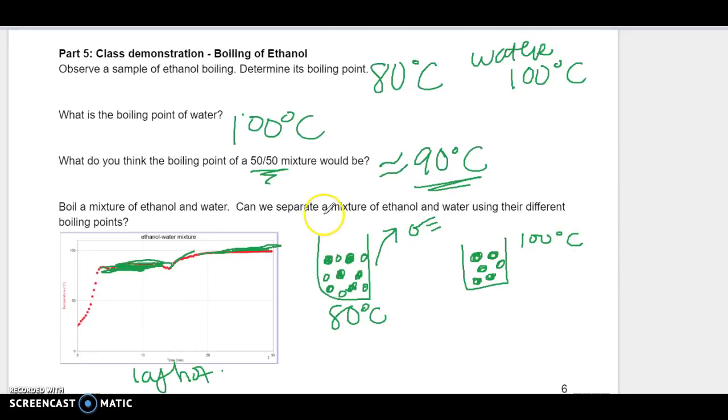So this is a way that you can separate a mixture of things with different boiling points, which is called distillation. It's a way to separate liquids that have different boiling points because the one with the lower boiling point will boil off first and then leave the other thing. So that's one other way that you can separate mixtures.